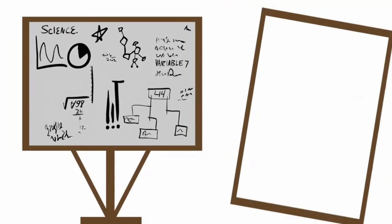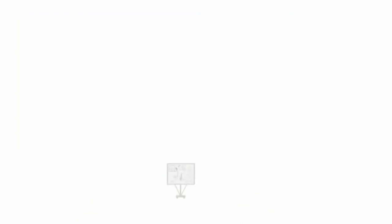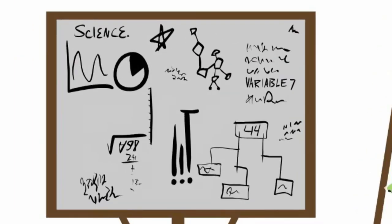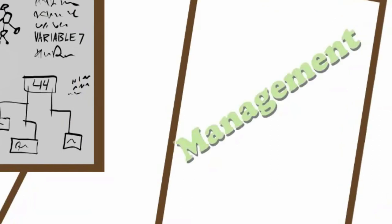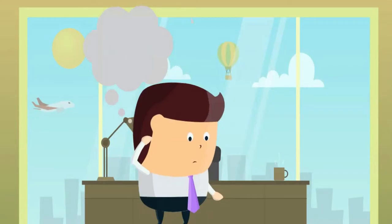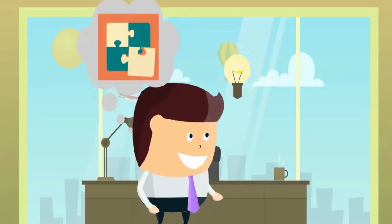Management can be viewed as both a science and an art. Management is a science. It uses scientific methods for observation. It's based on continued observation and experiment. Its principles are exact and have universal applicability without any limitation. Management is an art. Management is the know-how to accomplish a desired result.